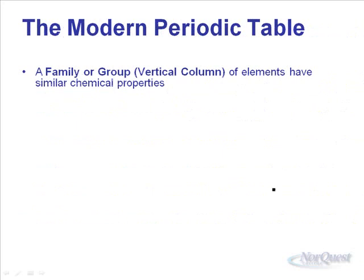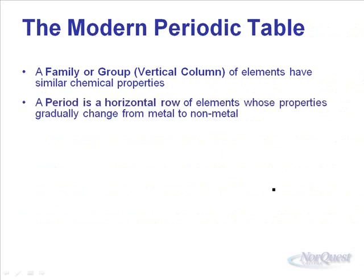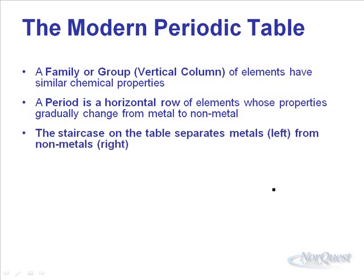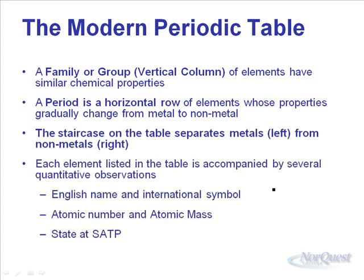On the periodic table, elements are grouped in families or vertical columns that share similar chemical properties. The periods are the horizontal rows. As you go through a period, you'll see a gradual change in properties from metal to non-metal. The staircase separates the metals from the non-metals, and the metalloids touch that staircase. Each element listed on the table is accompanied by several quantitative observations.